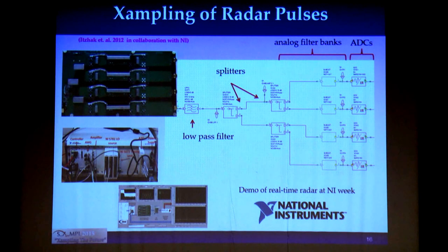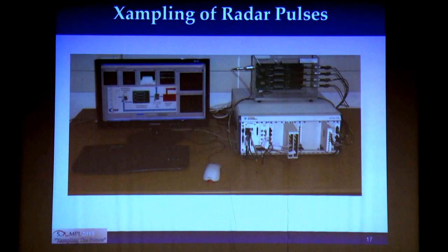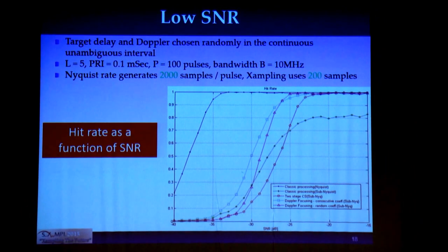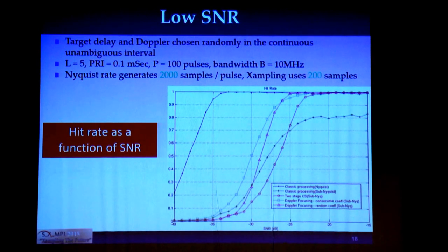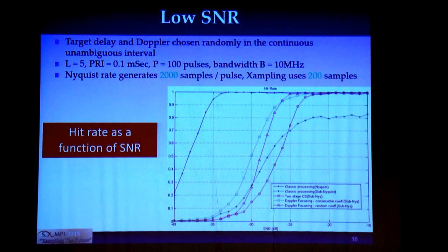An actual sub-Nyquist radar system was built according to this theory — you can see the sub-Nyquist sampling card on top, the NI system that runs everything, and the GUI. The system will be demonstrated in a few minutes. We compare Doppler focusing-based recovery for a 1-to-10 rate reduction from Nyquist — sampling at one-tenth the Nyquist rate — against various other sub-Nyquist or compressed sensing radar algorithms. Many standard compressed sensing radar algorithms were infeasible to run on a regular-size problem. The best performance is for a Nyquist rate receiver, but among sub-Nyquist methods, Doppler focusing achieves the best performance.